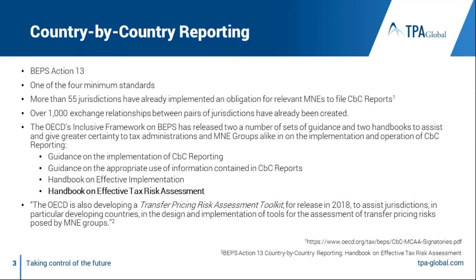Of those four minimum standards, harmful tax is one, treaty abuse is another. Action 13 on transfer pricing documentation is the third one, and the minimum requirements around dispute resolution is number four. More than 55 jurisdictions are already going into CBC reporting requirements by law. Some are effective for financial year 2017 or later, others have already included financial year 2016, which means some companies already have to disclose at the end of this year.